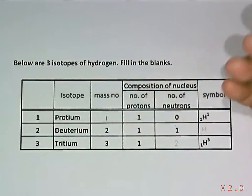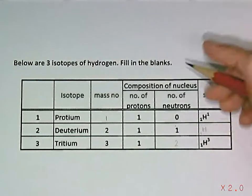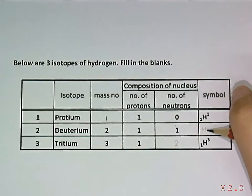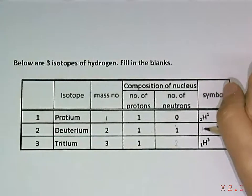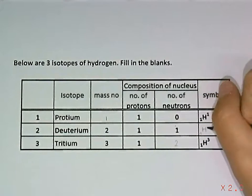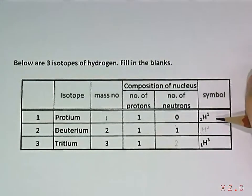So hydrogen will always have 1 proton. There will be hydrogen, H. And then for the relative atomic mass, just take 1 plus 1, there will be 2.